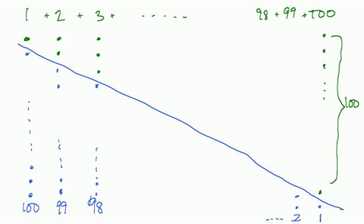I just put in the dividing line. But notice each column here. I have 100 plus 1. That's going to be 101. 99 plus 2. Again, 101. 98 plus 3. Again, 101.